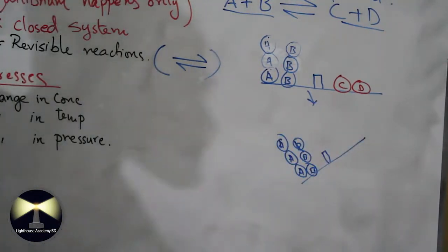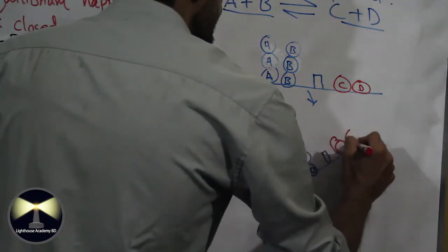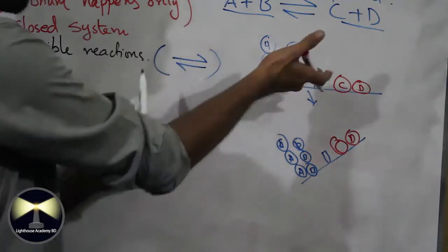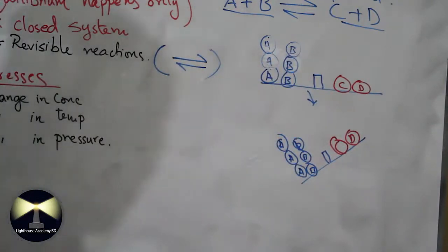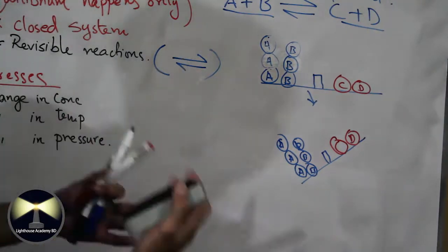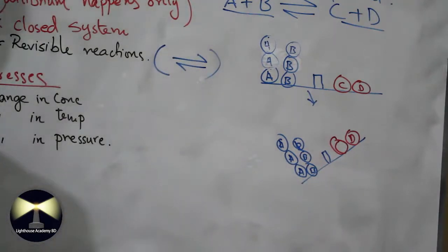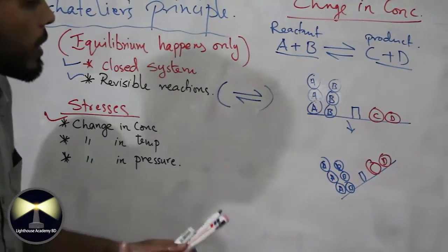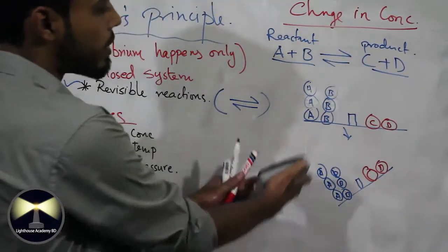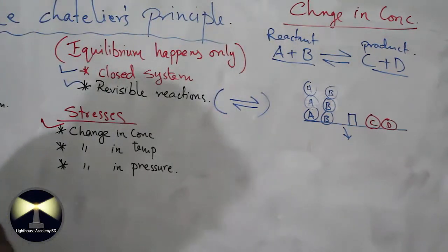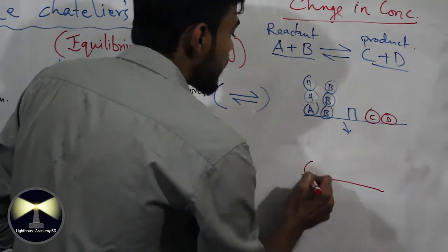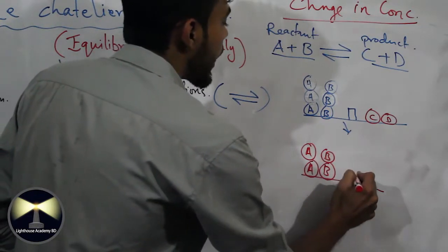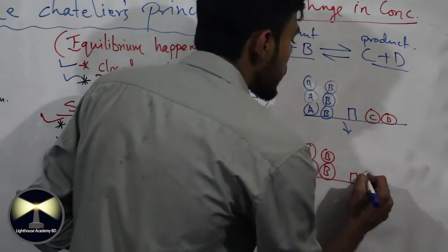So think of it like a see-saw — when you add weight to one side, the balance tips. This is exactly what happens here. When an external agency provides stress from outside, the system inside will do something to counteract that stress. So if we increase the concentration of reactant A, the system responds by reducing the reactants — by producing more C and D.